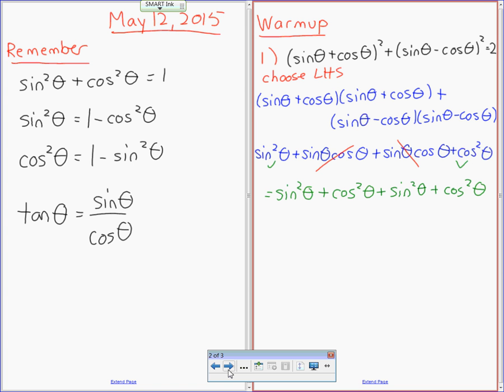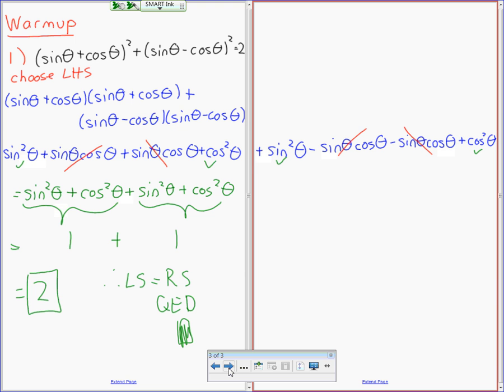So every time you see sine squared theta plus cos squared theta, you can call it a one. So I'm just gonna call this to be equal to one, and we're gonna call this one. You could have done two sine squared theta plus two cos squared theta, but then you have to do two times like that, and we're good.